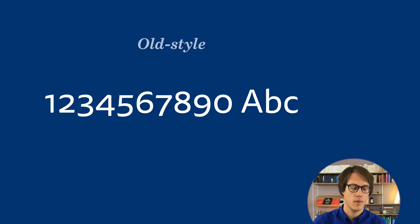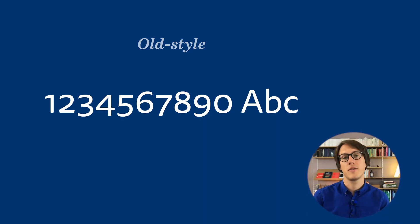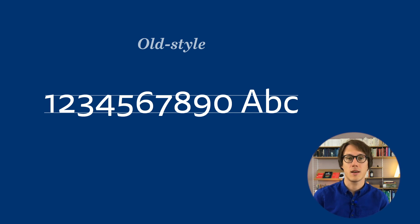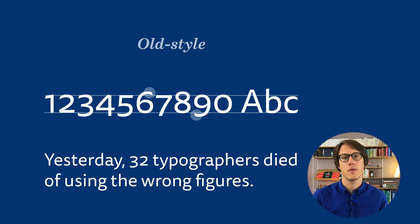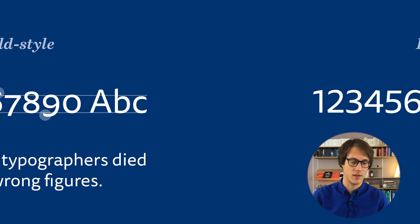In typography there are two different kinds of numbers, or figures. The first are old-style figures and the second are lining figures. Old-style figures are designed with varying heights — for example, the ascending 6 or the descending 9 — which blends in better with running text because it resembles a line of running text with its ascenders and descenders.